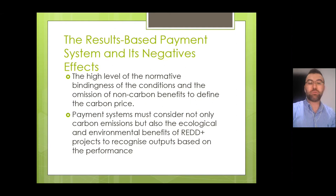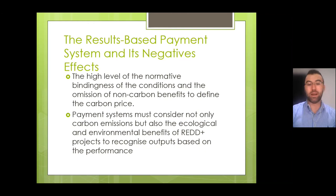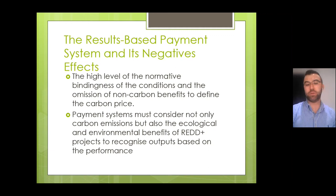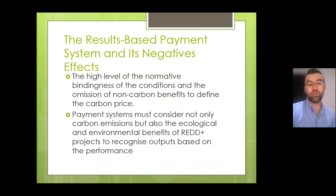The second issue is the results-based payment system. This system was established in the Paris Agreement to guarantee that resources invested in climate change will have an adequate and predictable impact. There are, however, several limitations such as the high number of requirements to obtain finance, the high level of normative bindingness of the conditions, and the omission of non-carbon benefits when defining the carbon price. Additionally, in Colombia there are other issues such as limited funding, the low price of carbon credits, the accumulative requirements to obtain financial aid, and the long-term implementation times for these projects.